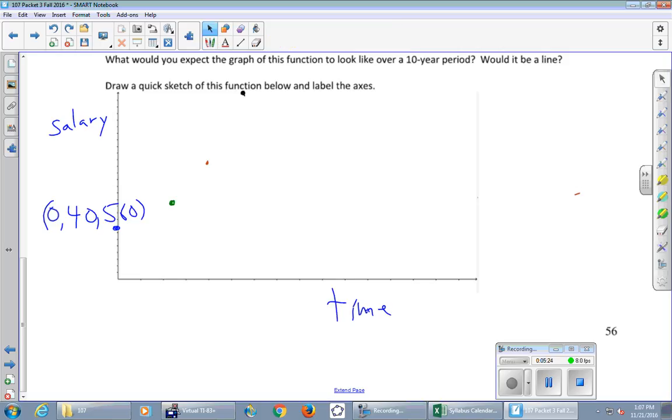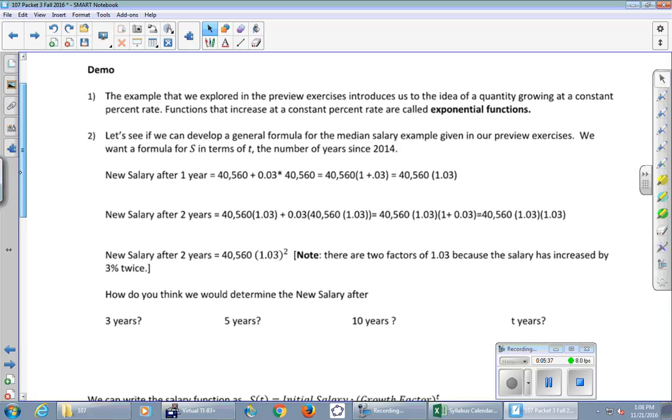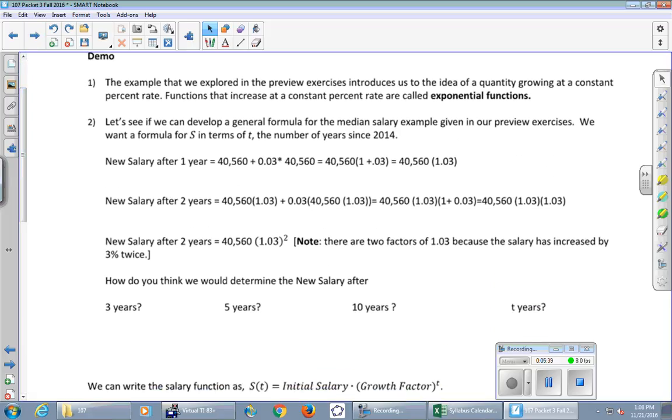And the next two sections are all about this kind of a thing where you grow by the same percentage, three percent per year, but then we can talk about what the actual dollar amounts are doing. So on the next page, we'll start with our demo. The example explored in the preview exercises introduces us to the idea of a quantity growing at a constant percent rate like three percent. Functions that increase at a constant percent rate are called exponential functions, and that's what we're studying today.